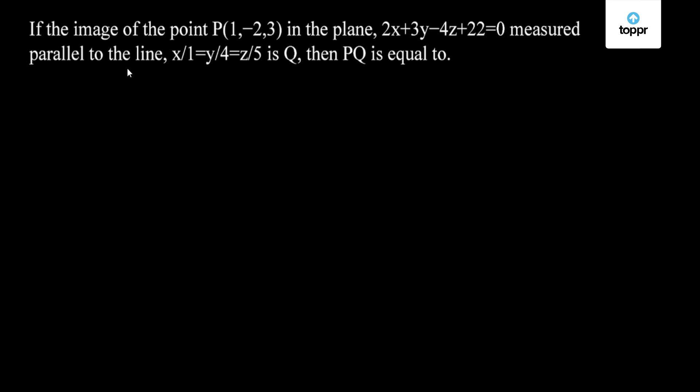measured parallel to the line x/1 = y/4 = z/5 is Q, then PQ is equal to. Now the point P is (1, -2, 3), the direction